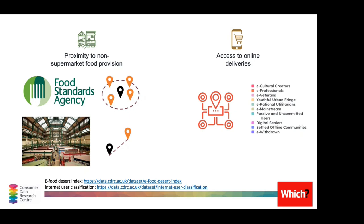To build on the E-Food Desert Index, we also wanted to capture proximity to non-supermarket food provision, as the cheapest food can often be found outside the supermarket. We used two additional open data sources: the Food Standards Agency data of non-supermarket food provision locations — the same data underlying food hygiene ratings — to calculate how many non-supermarket food provisions were available within a one kilometre radius; and the National Market Traders Federation database of markets to calculate distance to the nearest market, where fruit and vegetables are often cheaper to purchase.